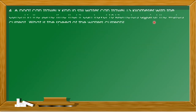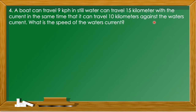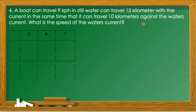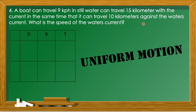Problem number four: A boat can travel 9 kilometers per hour in still water. It can travel 15 kilometers with the current in the same time it travels 10 kilometers against the current. What is the speed of the water's current? We are dealing with uniform motion since a factor — the current — affects the rate of movement.